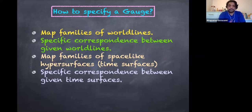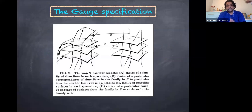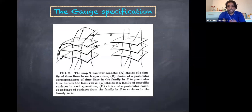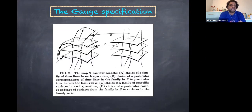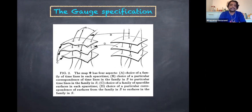This is a pictorial representation of the mapping. The choice of families of worldlines is A. The mapping B shows how one specific worldline is mapped to another. Similarly, C is the family of space-like surfaces, and D is the choice of particular correspondence between surfaces from one family in the idealized universe to the one family in the realistic universe.